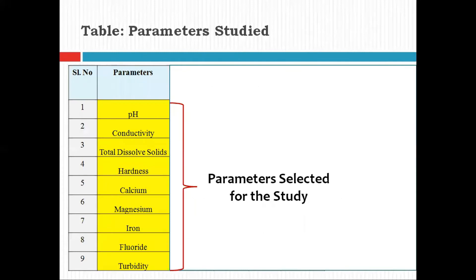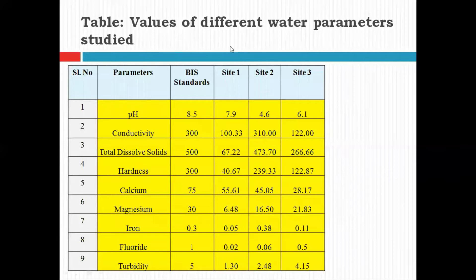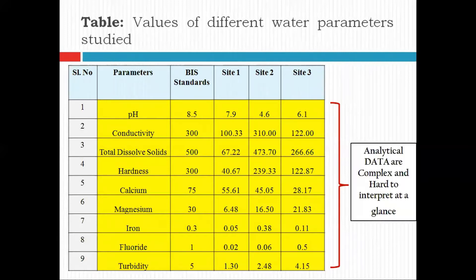For determining the water quality of the three different springs, let's say that these are the nine parameters that are selected for analysis. Let's assume that the mean values of these different parameters studied are given here in this table. By looking at the raw analytical data, this data is complex and hard to interpret in terms of the meaning it carries with respect to the water quality the three different sampling sites possess.